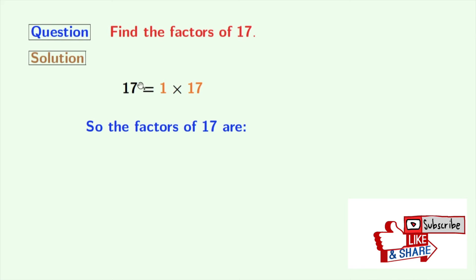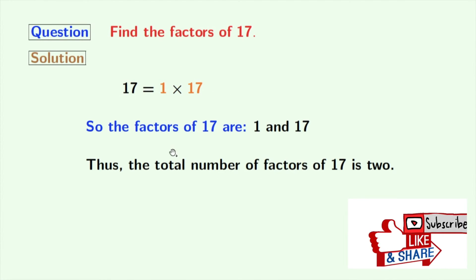So the factors of 17 are 1 and 17. Thus, the total number of factors of 17 is two.